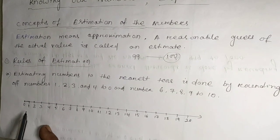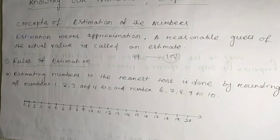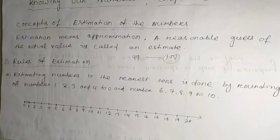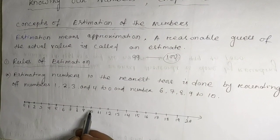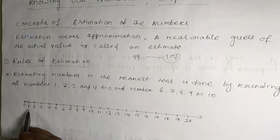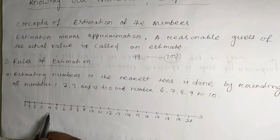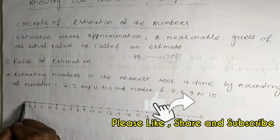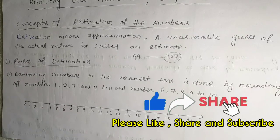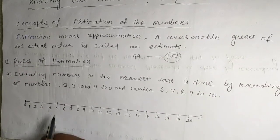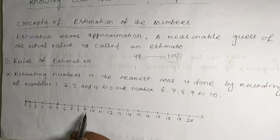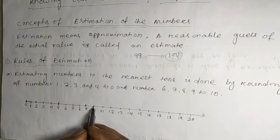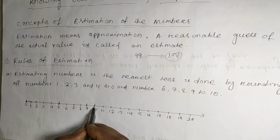On a number line from 0 to 20: numbers 1, 2, 3, 4 — their round off will be 0. Then from 5 to 9, their round off will be 10.